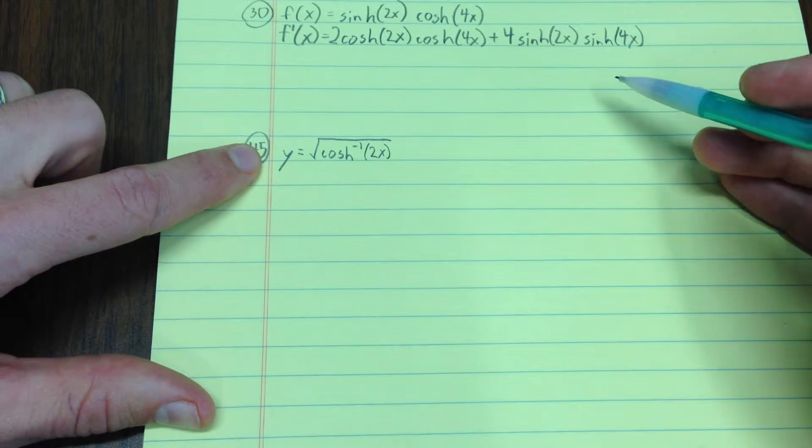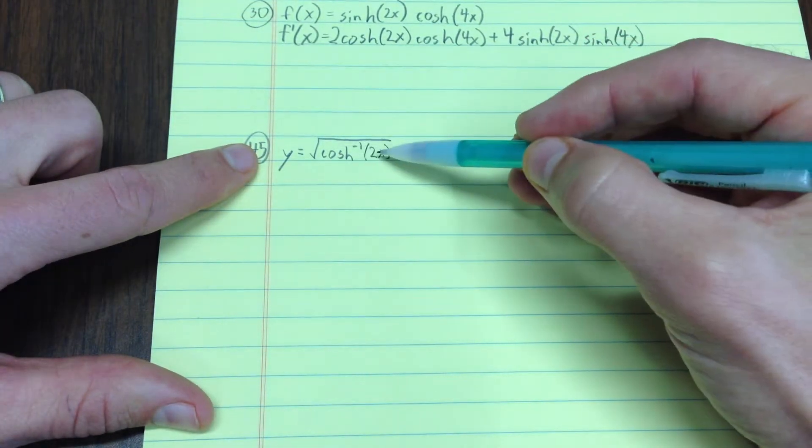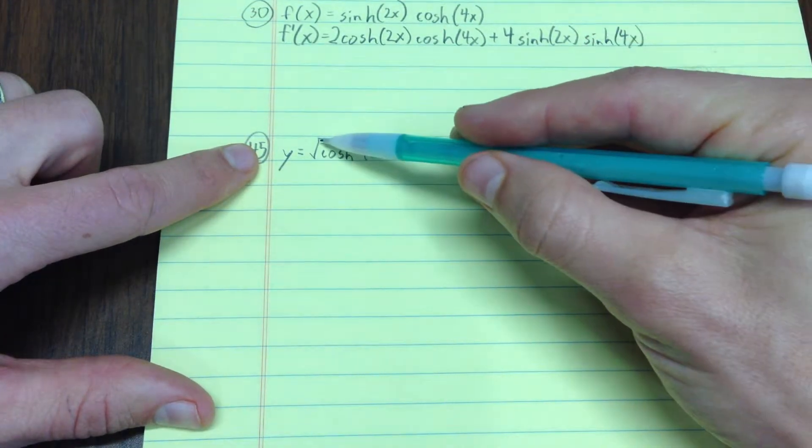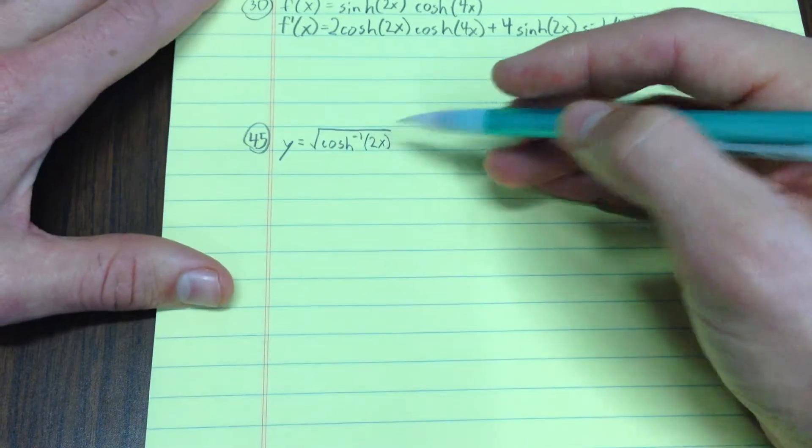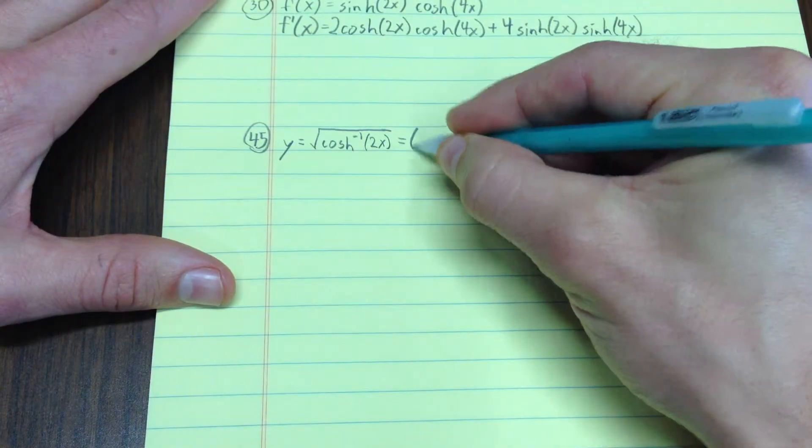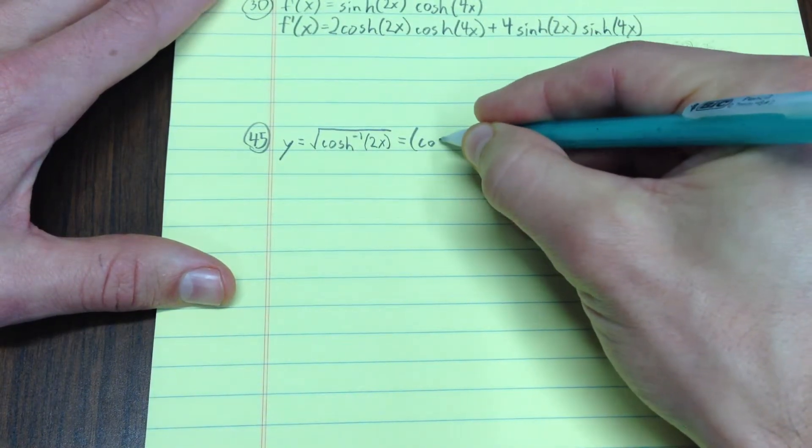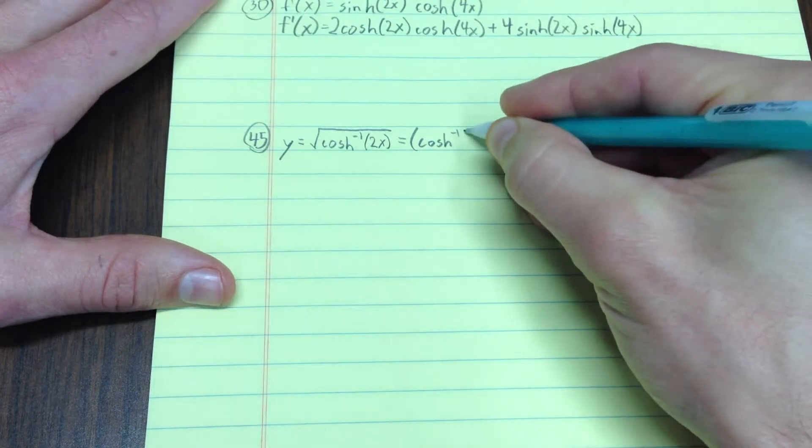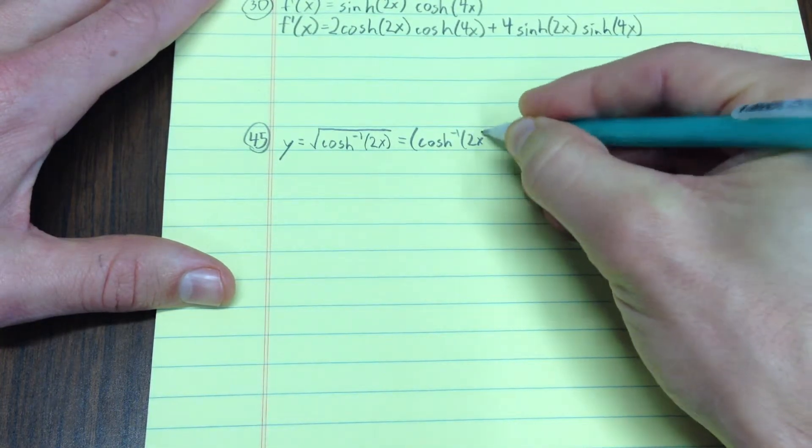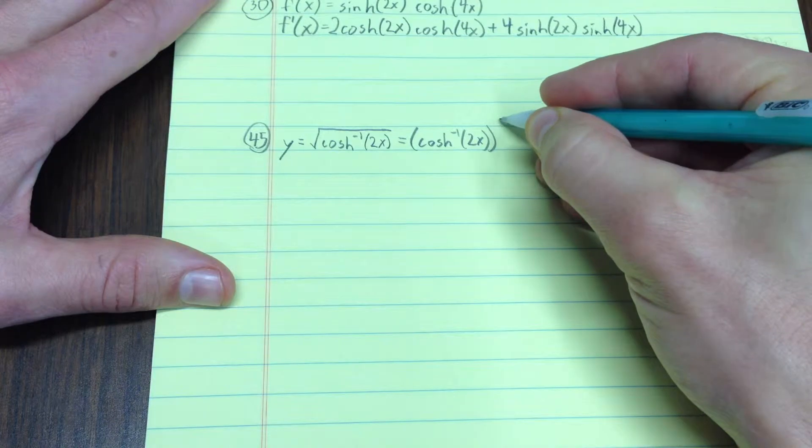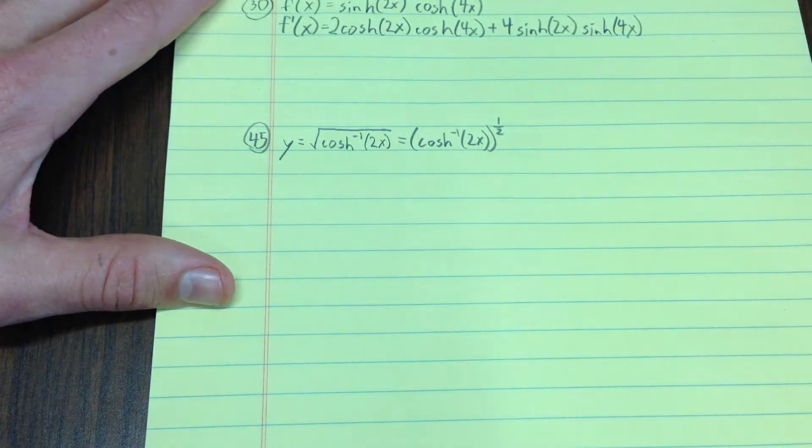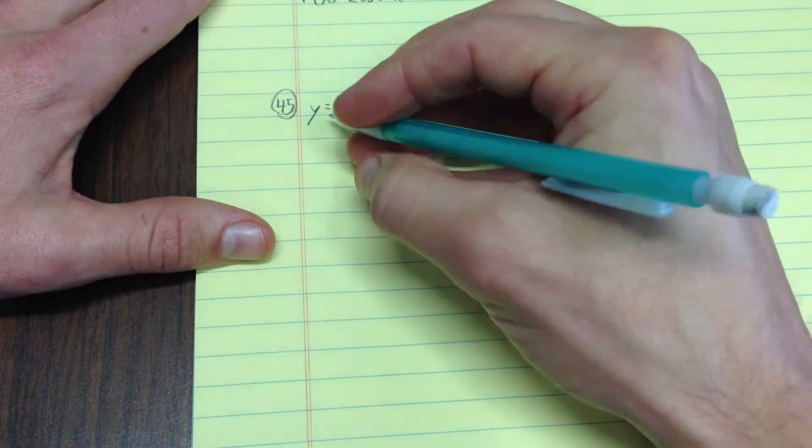Looking at this problem now, notice here I have a function inside a function inside a function, so I'm going to use the chain rule there. I'm really thinking about this as being cosh inverse of 2x inside a power function to the 1 half. So, using the chain rule here,